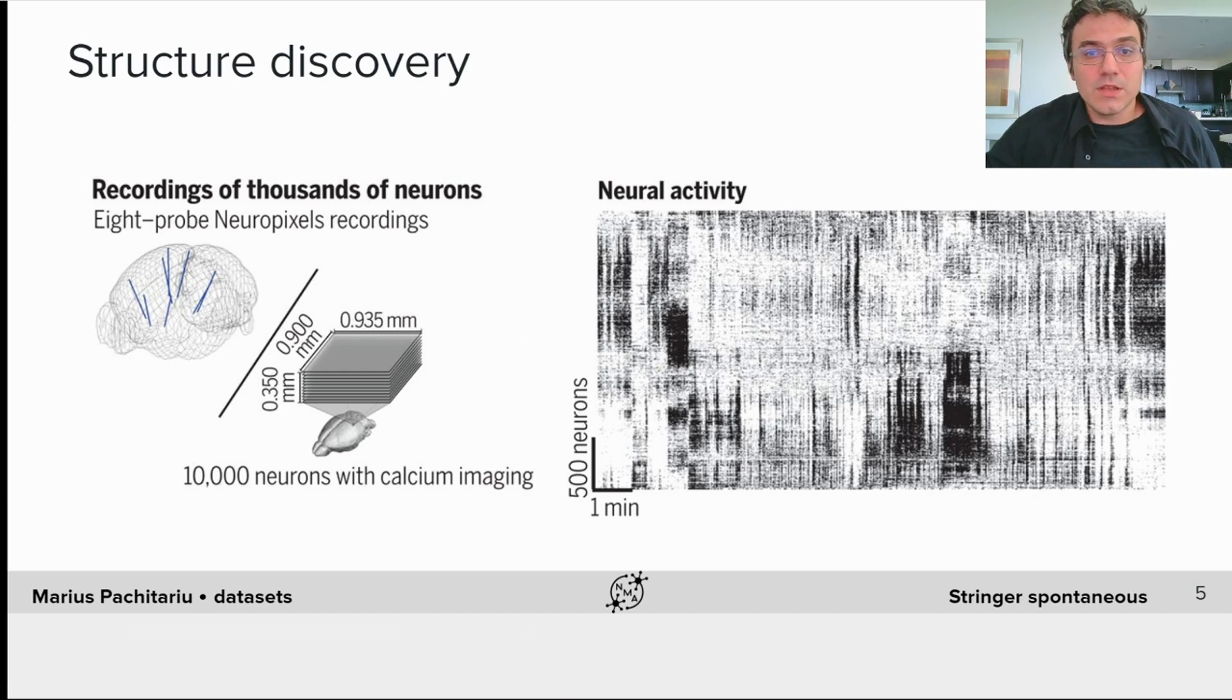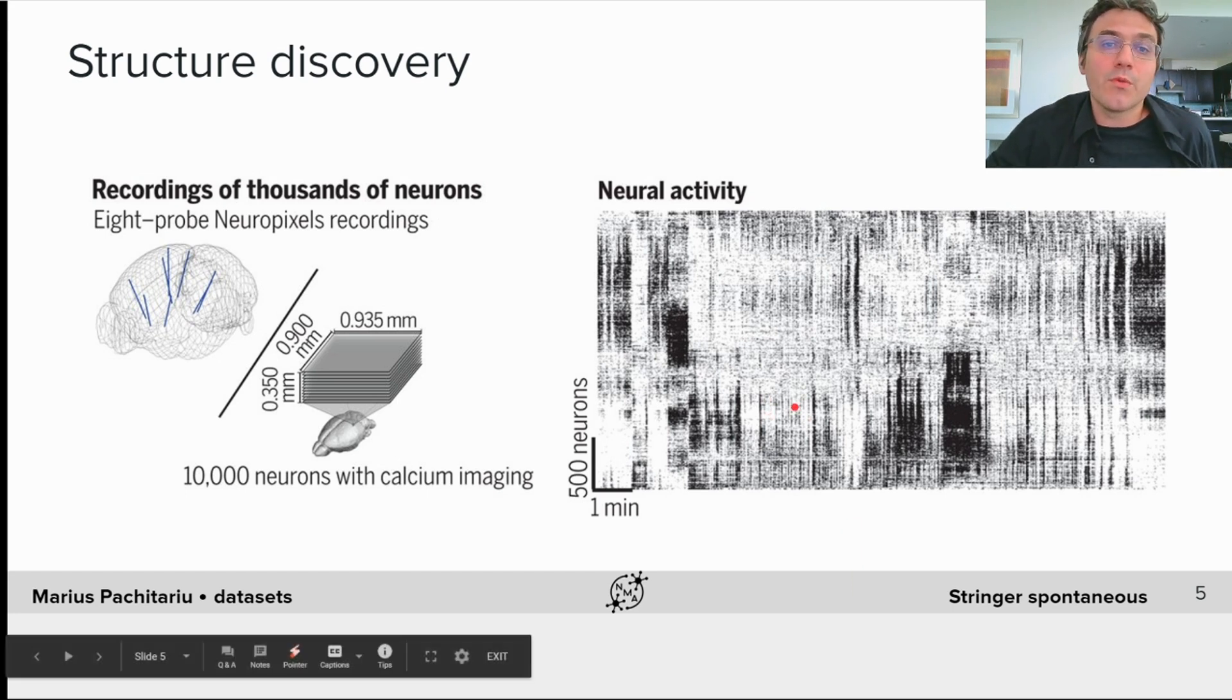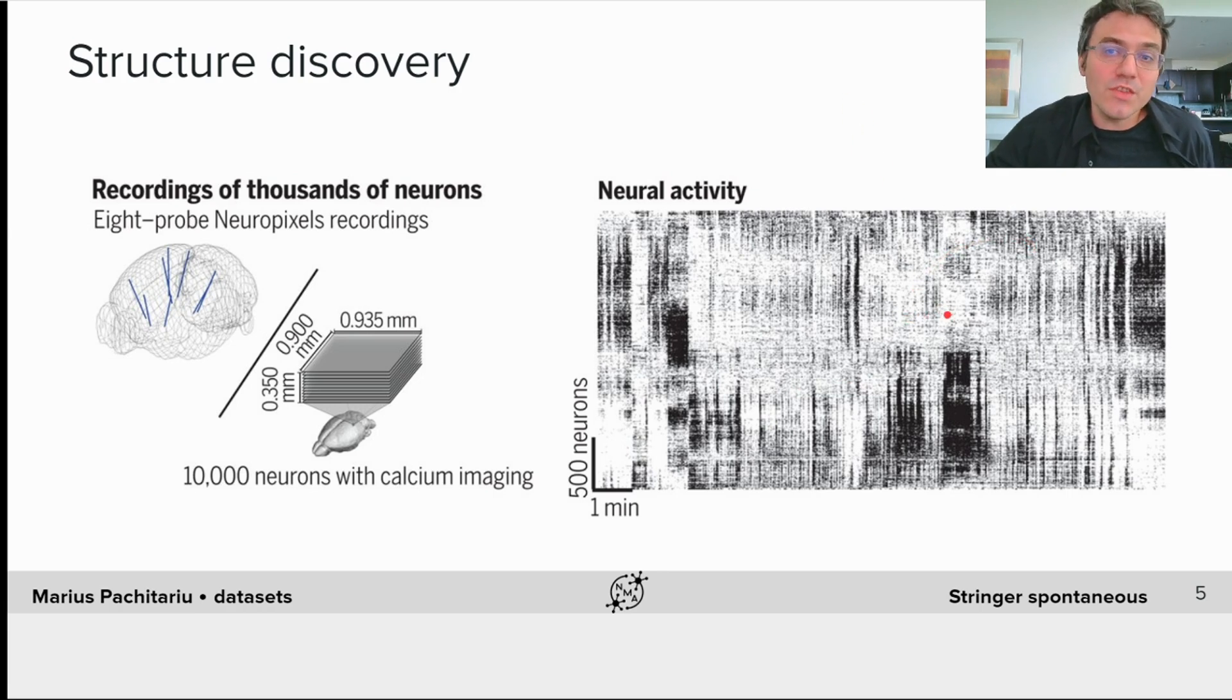This dataset is ideally suited for applying all sorts of structure discovery algorithms, from clustering to dimensionality reduction to dynamical modeling. In the paper, we use the simple but powerful visualization that we call a raster map, shown here on the right. A raster map is obtained by arranging the activity patterns of the neurons along the y-axis of an image plot, so that neurons with similar activity patterns are next to each other. This gives rise to clear clusters of activity, as well as gradients from the top to the bottom of this activity map.